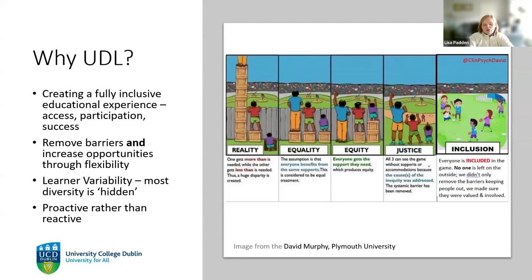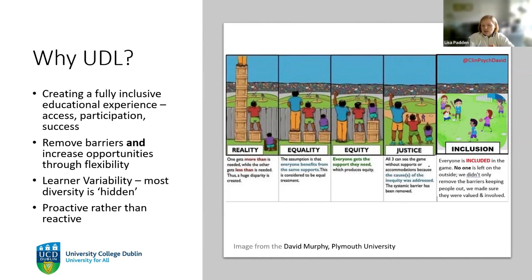Accessibility is one aspect of universal design. With universal design for learning — UDL — what we're aiming to do is create a fully inclusive experience for every person, proactively removing barriers by offering flexibility. Most learner variability we come across is what we consider hidden diversity — you can't tell when you meet somebody if they have a particular need. We should ultimately eliminate the need for somebody to put up their hand and ask for something different because what we've provided isn't accessible to them.